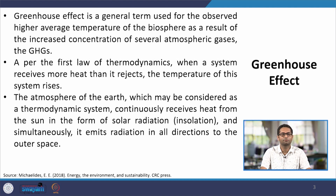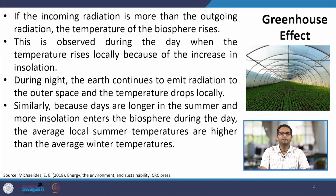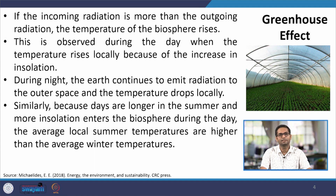We continuously receive insolation from the sun in the form of solar radiation, and the Earth also emits radiation to outer space 24/7. During the day, the insolation from the sun is much more than the radiation the Earth emits outward. At night, solar radiation dips greatly while radiation from the Earth to the atmosphere tends to be more — which is why nights are generally cooler. Similarly, longer summer days mean more insolation, which is one reason summer temperatures are higher than winter.